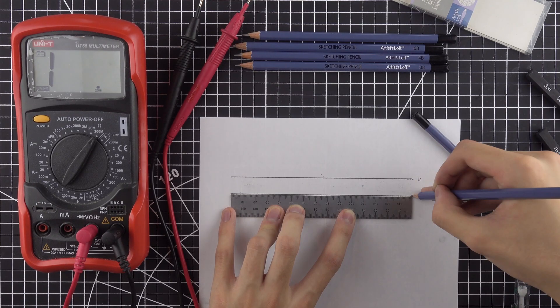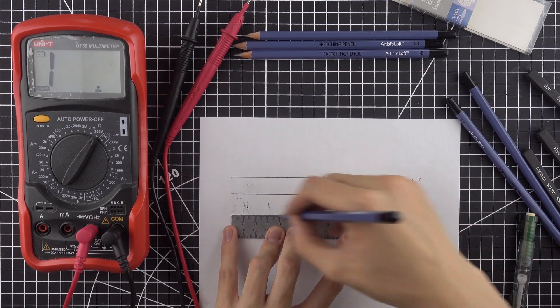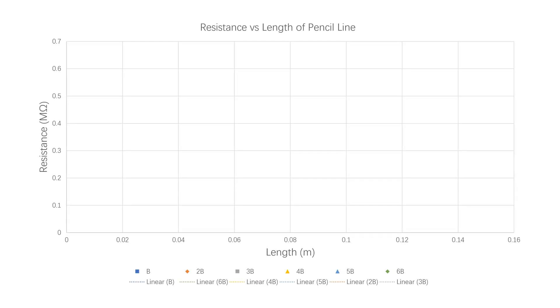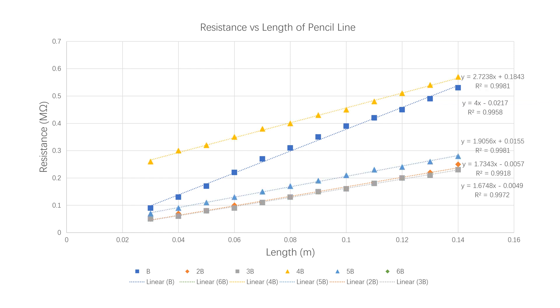Next, I tested the variety of pencils that I got using a similar method. Here is a plot of the resistance versus length. Again, we can see that there is a clear linear relationship. However, the regression lines show different slopes.